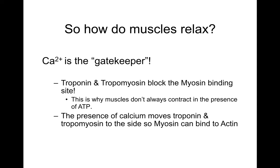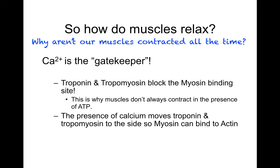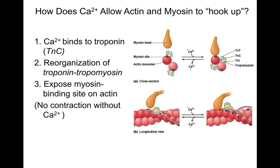The relaxed state is when those binding sites are blocked. What you need calcium for is to move the troponin and tropomyosin aside so that the myosin can bind to the actin — this is why our muscles are not contracted all the time. Calcium binds to the troponin TNC subunit, causing a reorganization of the troponin-tropomyosin complex, thereby exposing the myosin binding site on the actin. There is absolutely no contraction without calcium.